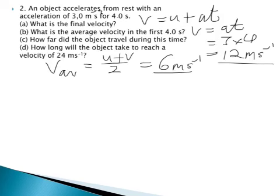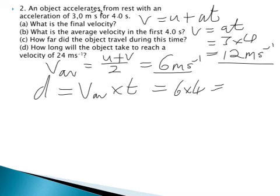How far did the object travel during this time? To find out the distance travelled, we use the average speed and multiply it by the time. 6 times 4 gives us 24 metres.